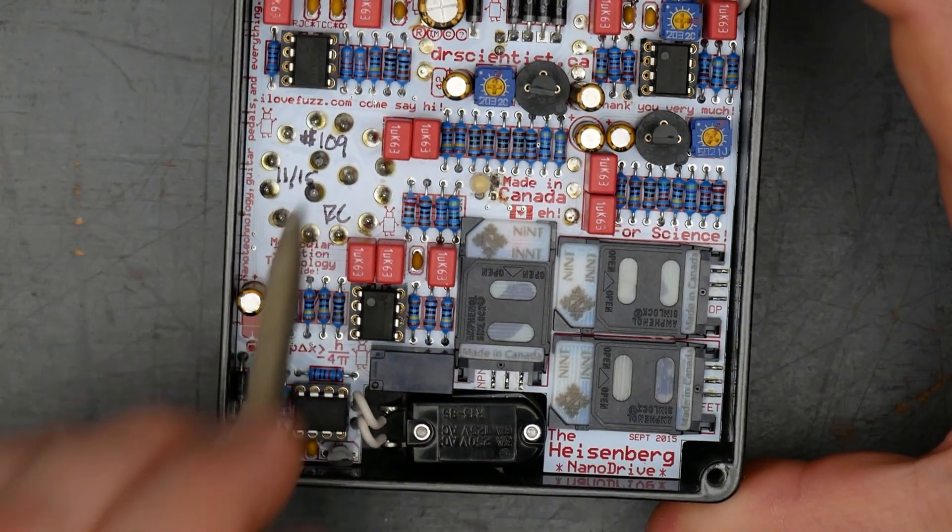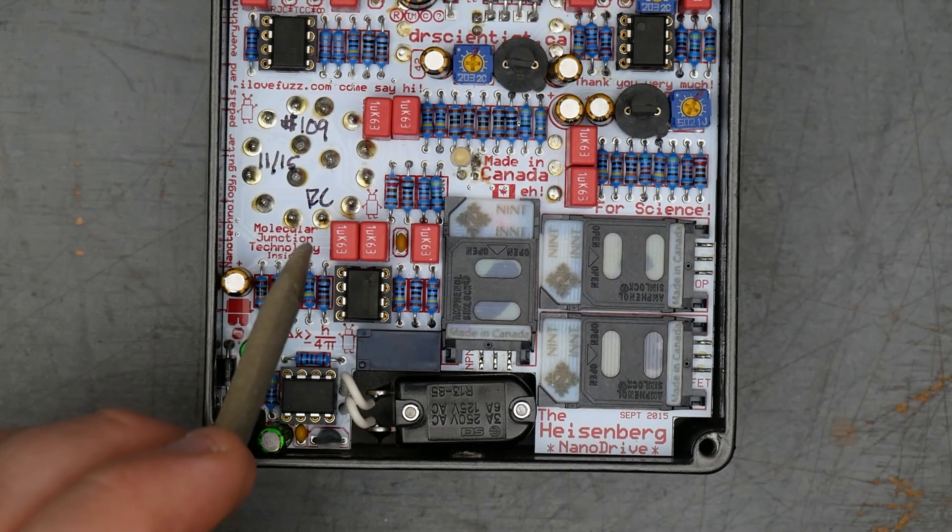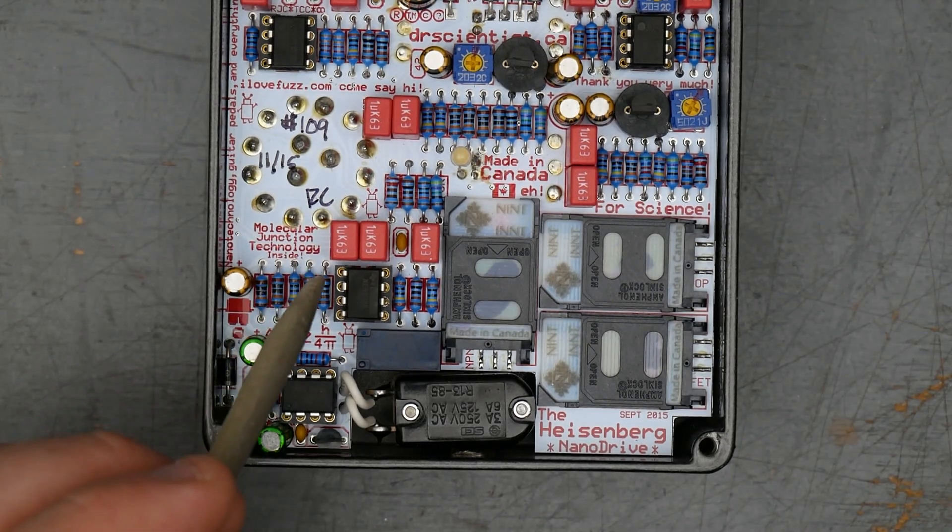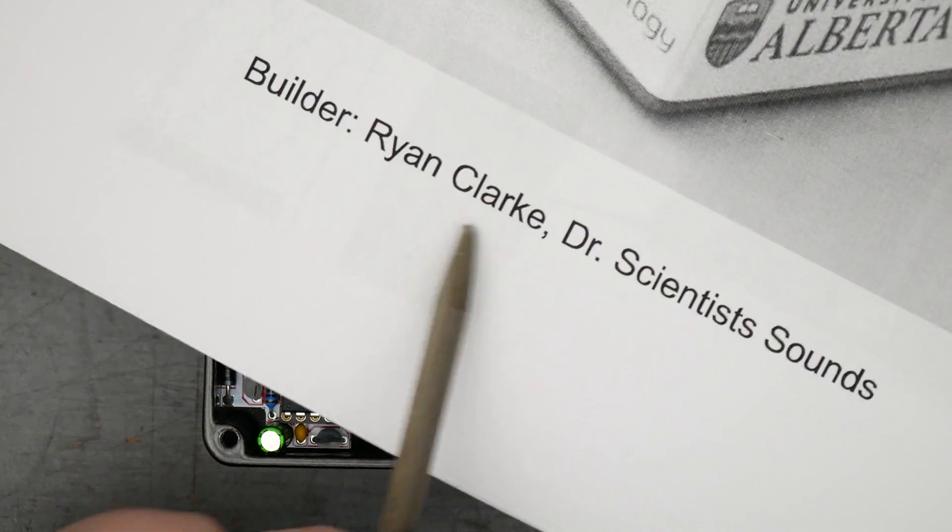I don't know if you can actually get these out of here. There's definitely not clearance on the PCB to remove them. I don't think it would be removable. They had different versions, so the concept of removing them could be there, but these don't look removable. And then you can see on top, they have the NINT logo, which is the National Institute of Nanotechnology. So this was created November of 2015. RC there is the Dr. Scientist, Ryan Clark.